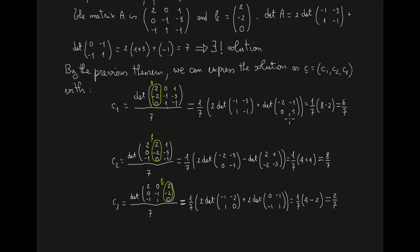For C2, the index i is 2, so we replace the second column of A with vector B. The first column remains from A: 2, 0, negative 1. The second column is B: 2, negative 2, 0. The third column remains from A: 1, negative 3, negative 1. Expanding this determinant, we find the result is 8, so C2 equals 8 over 7.